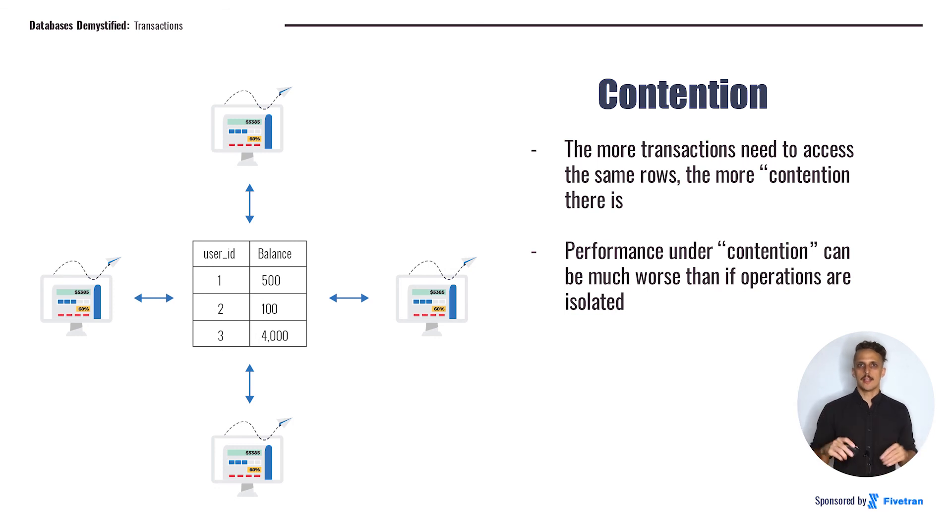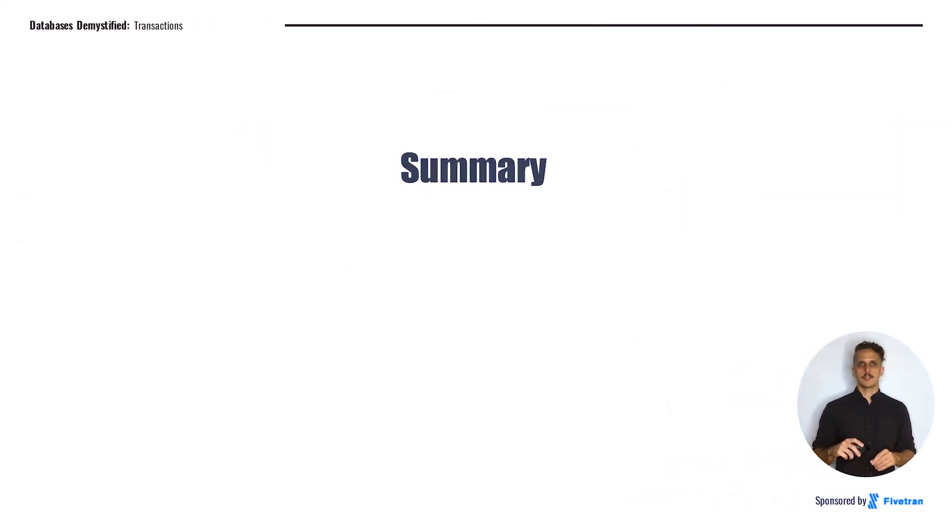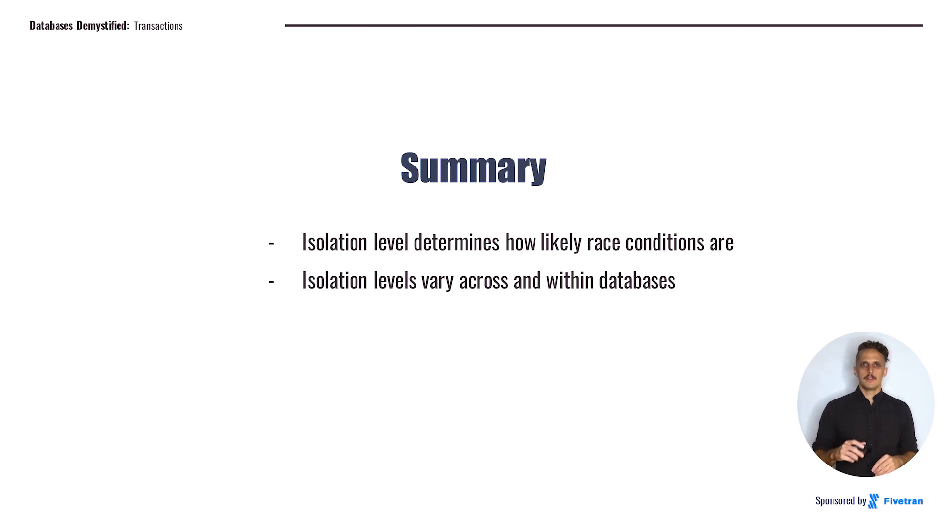So let's summarize. Isolation level determines how likely race conditions are in our database. If we have more isolation, we'll have fewer race conditions, and if we have less isolation, we'll have more race conditions. These race conditions can lead to bugs that can be very difficult to deal with. Isolation levels can vary across and within databases. Each database implements these different isolation levels a little bit differently. If you're working closely with these databases, it's really important to make sure to read the documentation closely and even test it if you can to make sure that the database is going to work the way that you expect it will when different processes are operating in parallel.